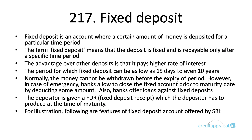In contrast to a savings bank account, where you can withdraw at any time you want, fixed deposit works differently. For example, if you have taken a fixed deposit for 3 years, only after 3 years will the bank give you back that amount. You cannot withdraw it before that time. The period can vary from 15 days to even 10 years.